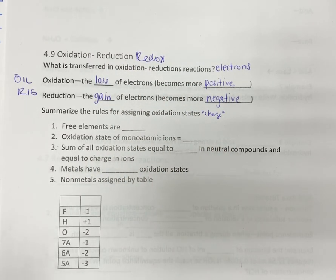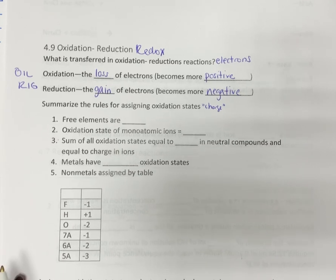We've dealt with charges when we did ions and compounds, but it's going to get a little bit more complicated than that. Every element that's going to be in one of these equations is going to be assigned an oxidation number. Charge is just to kind of help you.